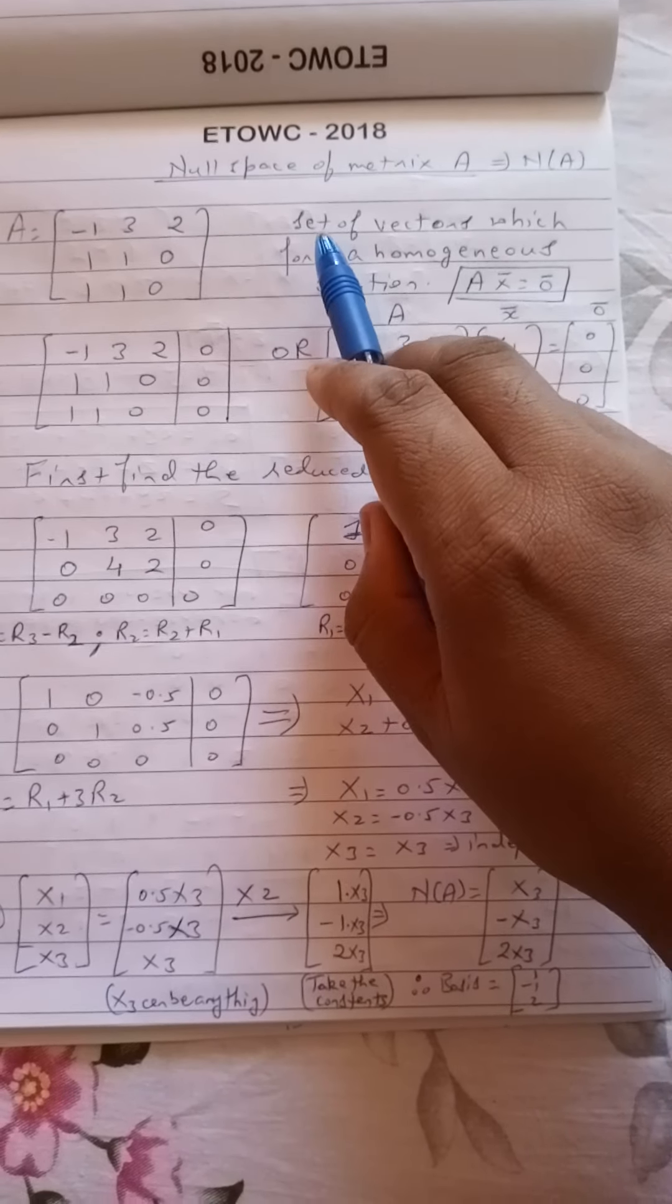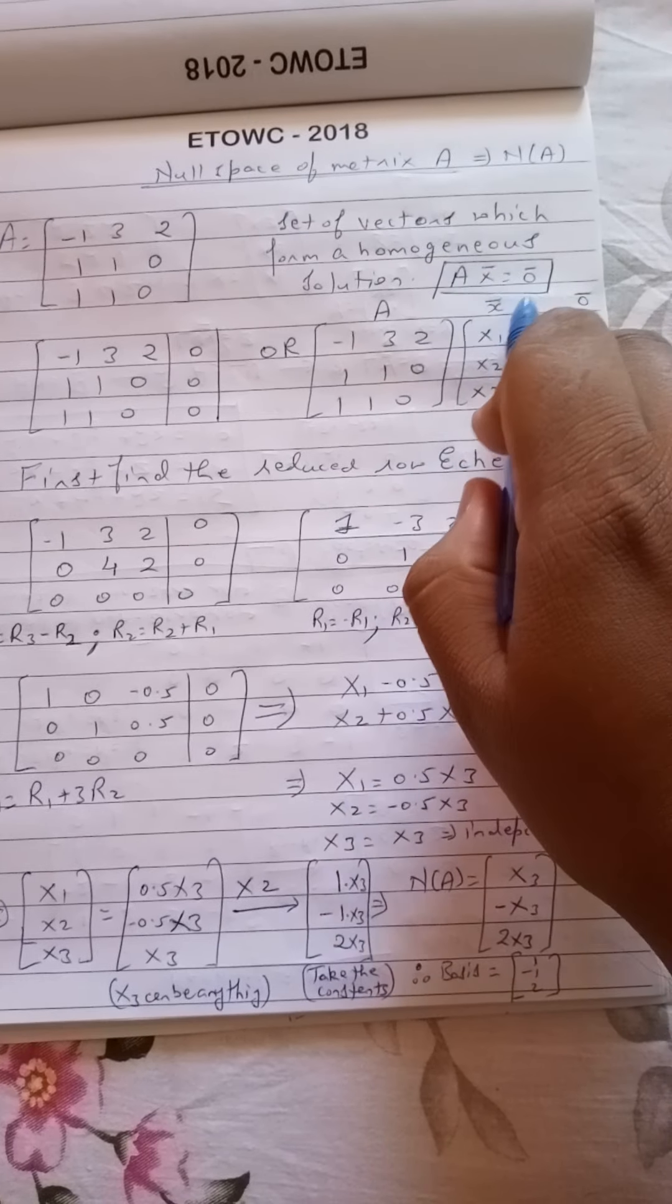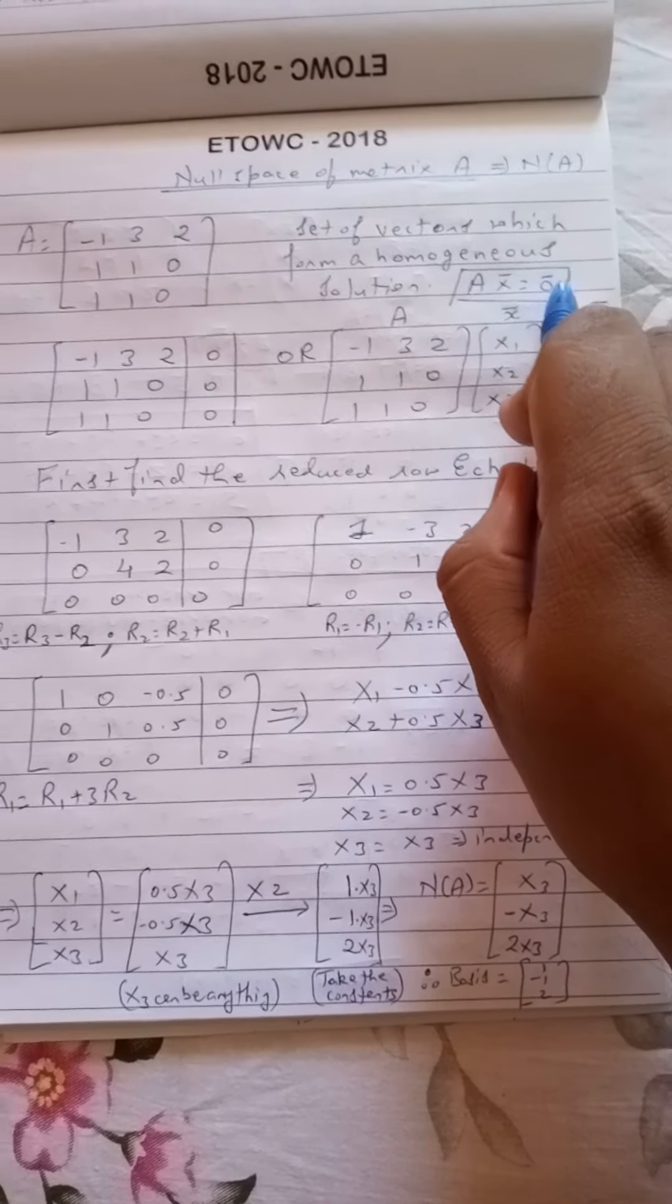Now basically the null space is found as the set of vectors which form a homogeneous solution to AX bar equal to 0 bar, where A is the matrix which is given to us, X bar is the X vector, and 0 bar is the 0 vector.